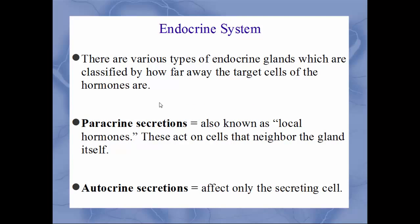There are various types of endocrine glands, classified by where their target cells are. Paracrine secretions are also known as local hormones — they act on cells neighboring the gland itself. Autocrine secretions affect only the secreting cell itself.